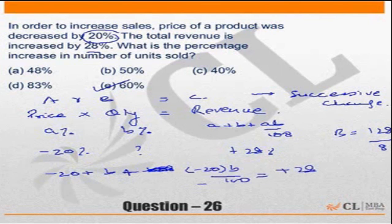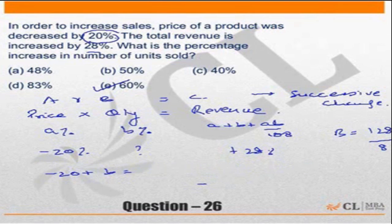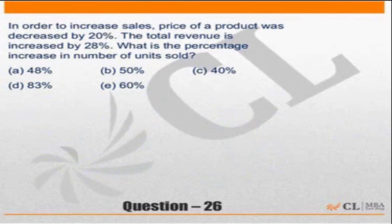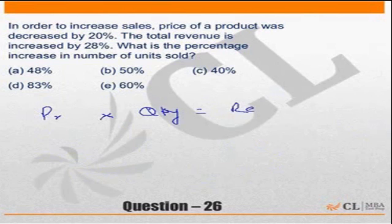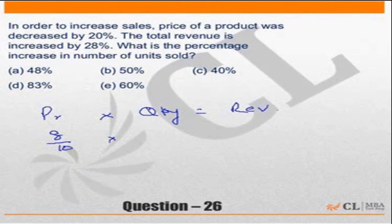There is a third method, which we can do now in the form of ratios. Price into quantity equals revenue. Price decreased by 20% so price has become 8 by 10 times. The quantity change is what we need to find. Revenue has become 128% or 128 by 100 times. This ratio approach would also give you the answer.